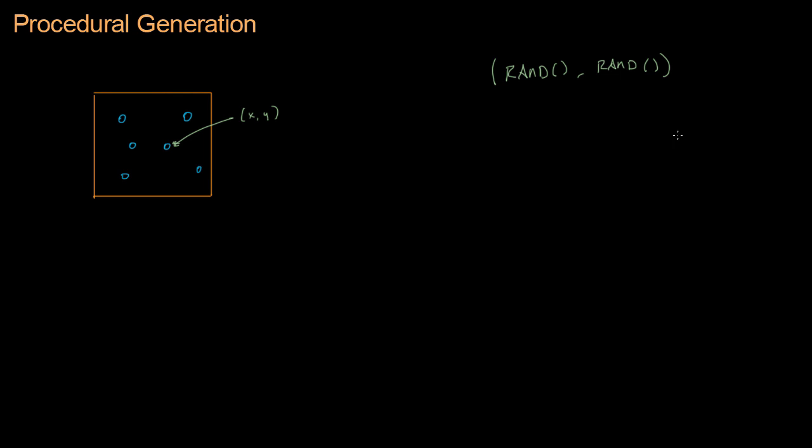The problem is the rand will give you a value between 0 and R, where R is the maximum value that this random number generator will spit out. What we really want is a number that will fit inside this room, because R is going to be a huge number, like 2 billion or something like that.